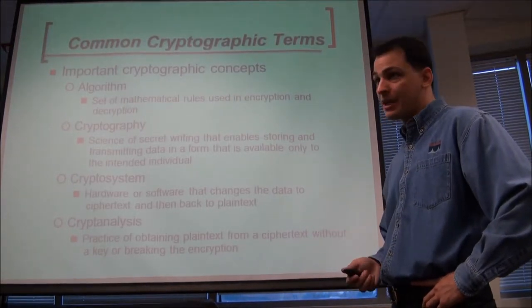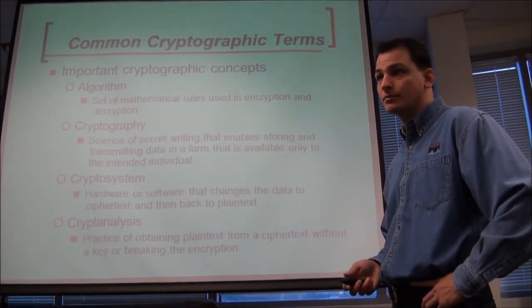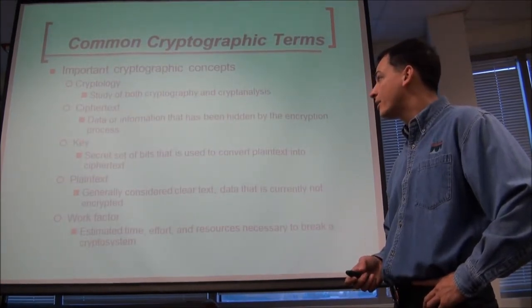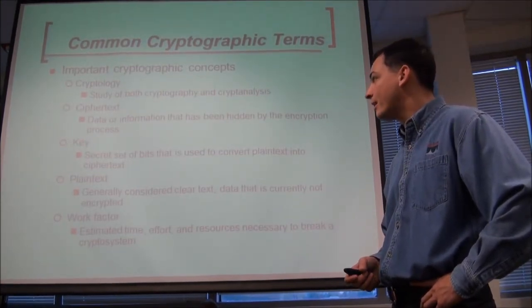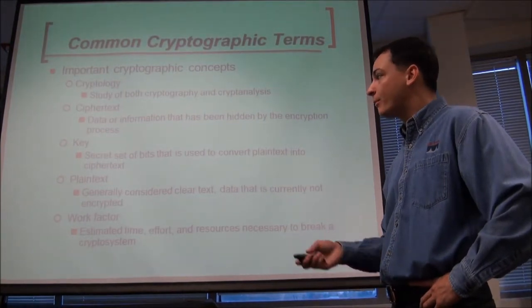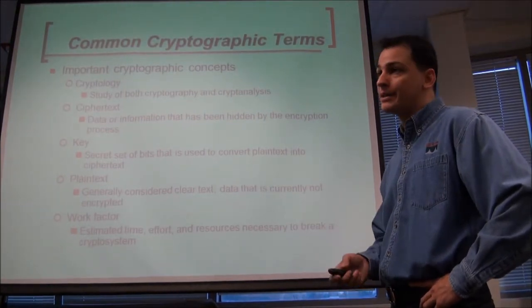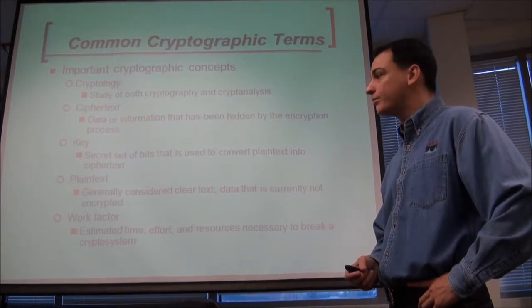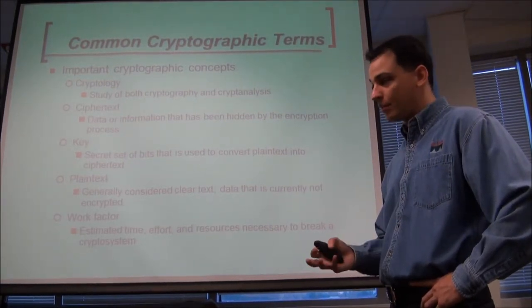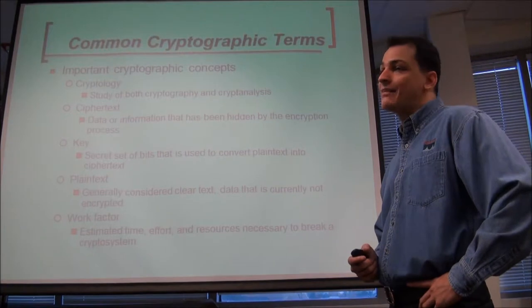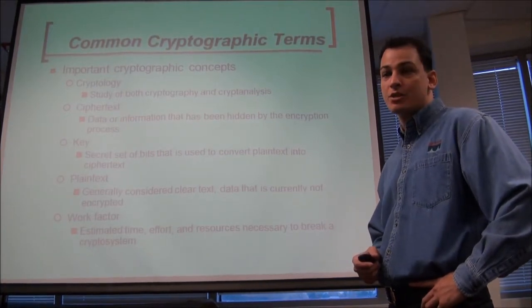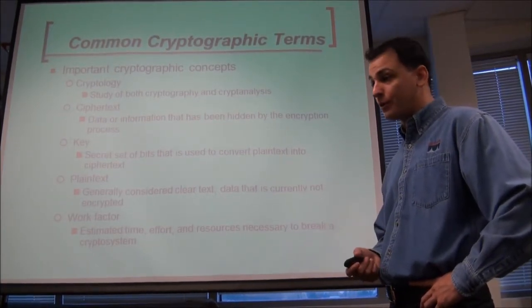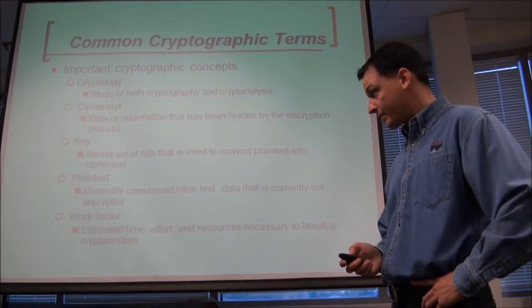Cryptography is just the science of it. Cryptology is the study of both cryptography and cryptanalysis. Then we get into more common definitions: ciphertext is the hidden stuff; plaintext is the stuff you can read; and you're going to have a key. The key allows you to convert from plaintext to ciphertext and back and forth.